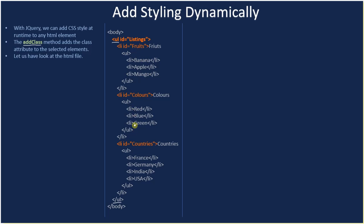Inside each list item we have nested UL tags with a set of list elements. One list item is 'fruits', one is 'colors', and one is 'countries'. Inside, we form another nested list with items like 'banana', since it's fruits. The IDs are unique — 'fruits' here, 'colors' here, and 'countries' here — the ID value does not repeat.